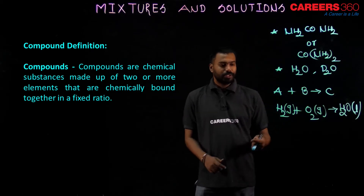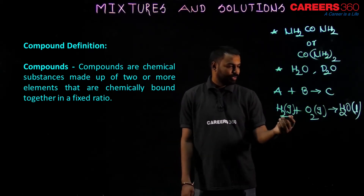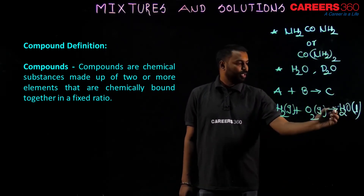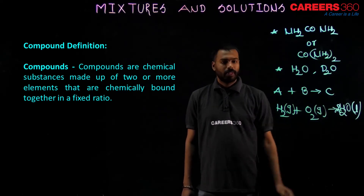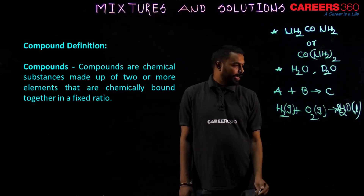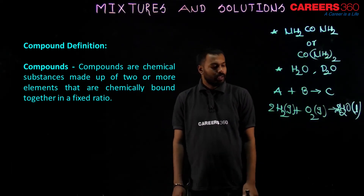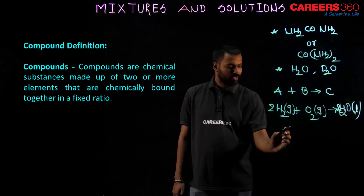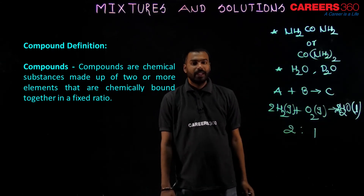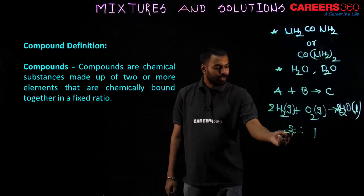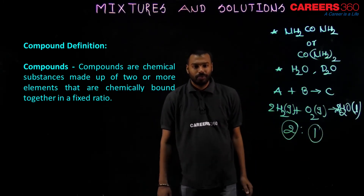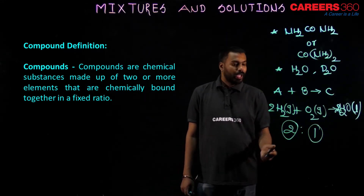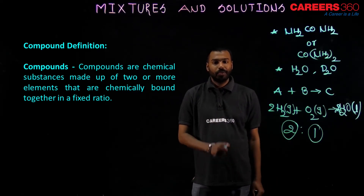For example, H2 and O2. If you balance the equation, you get two hydrogen and one oxygen, so the ratio is 2:1. Two moles of hydrogen and one mole of oxygen react together in a definite ratio. When hydrogen and oxygen combine in this fixed ratio of 2:1, water forms — and that is a compound. In order to form a compound, elements should combine in a definite, fixed ratio.